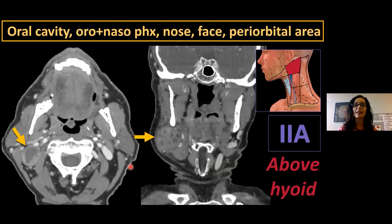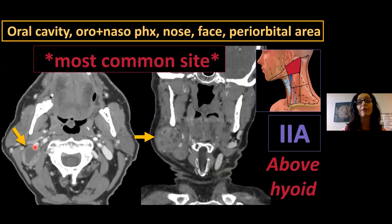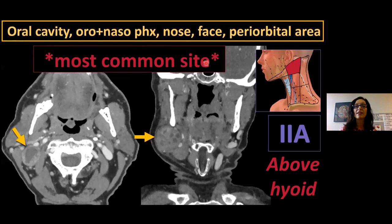Level 2A is along the jugular vein above the lower aspect of the hyoid. This is the most common site for malignant lymphadenopathy in the head and neck. Oral cavity lesions can drain back to level 2. Oropharyngeal and nasopharyngeal malignancies love to spread here. Other malignancies from the nose and face also drain here. Level 2 is a critical place to look on every scan. Remember: the lower border of level 2 is above the hyoid.